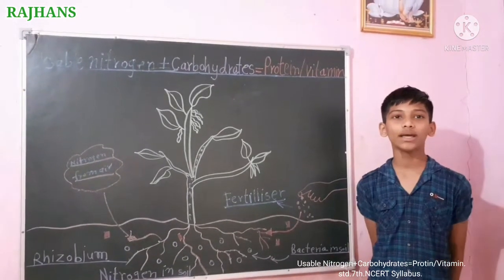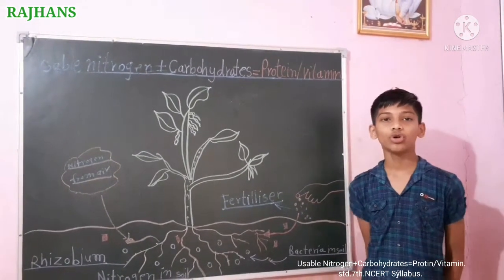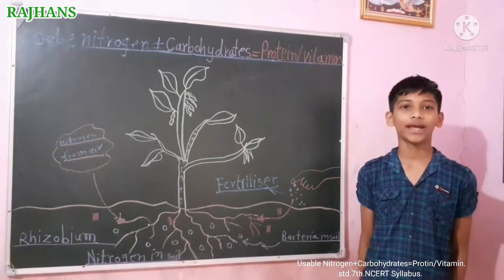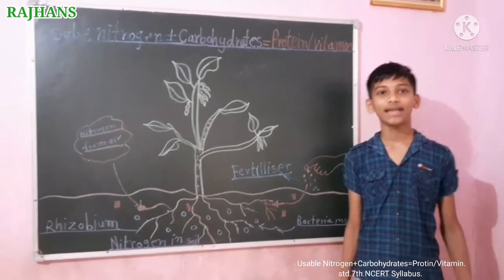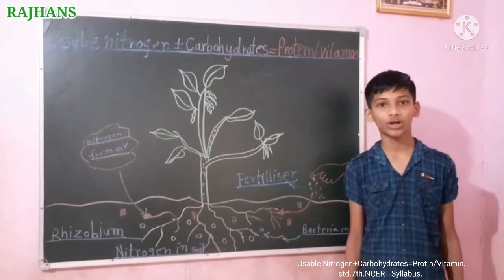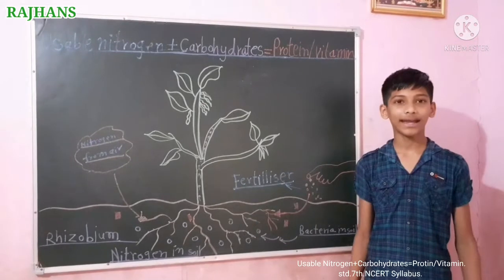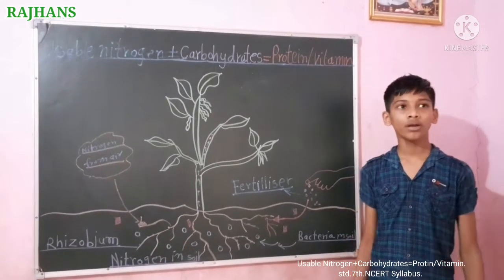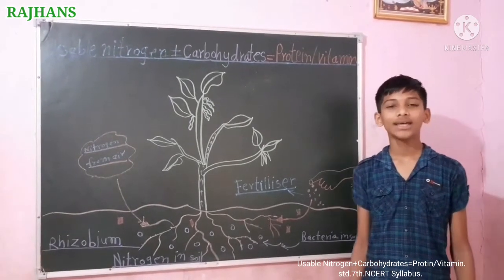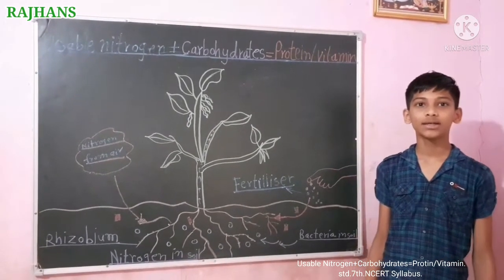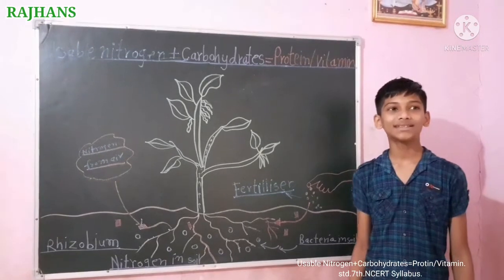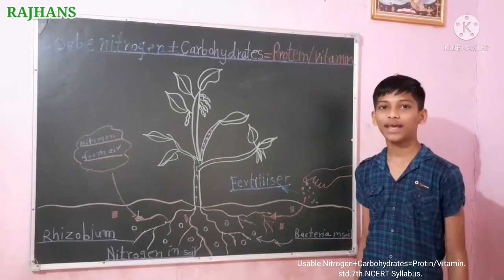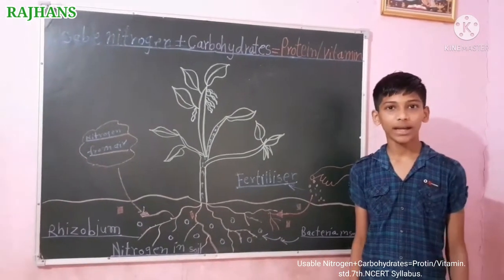Plants synthesize only carbohydrates through photosynthesis, but how do they obtain nutrients such as fats, vitamins, and proteins? In addition to carbon, hydrogen, and oxygen present in carbohydrates, plants also need nitrogen, which is present in proteins and vitamins.